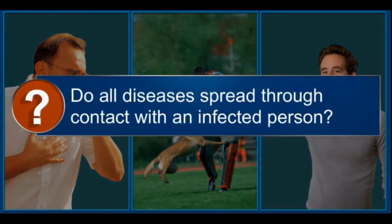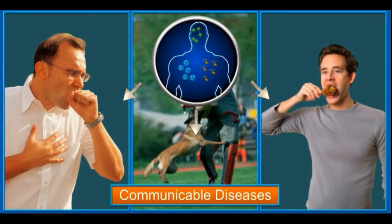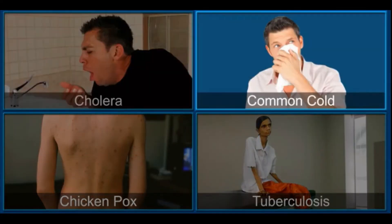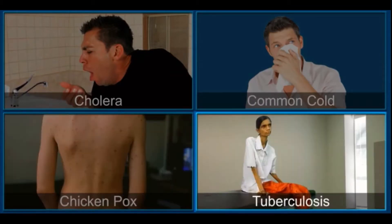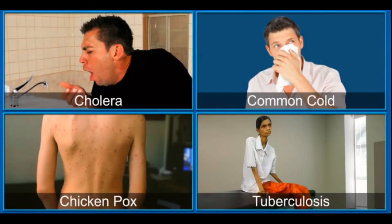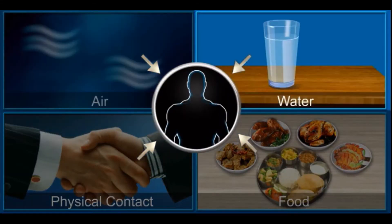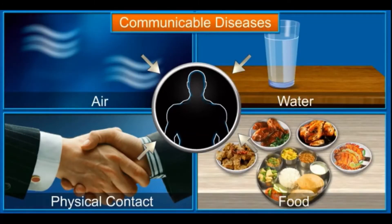Do all diseases spread through contact with an infected person? Only communicable diseases spread through contact with an infected person. Diseases like cholera, common cold, chicken pox, and tuberculosis, which spread from an infected person to a healthy person through air, water, food or physical contact, are called communicable diseases.